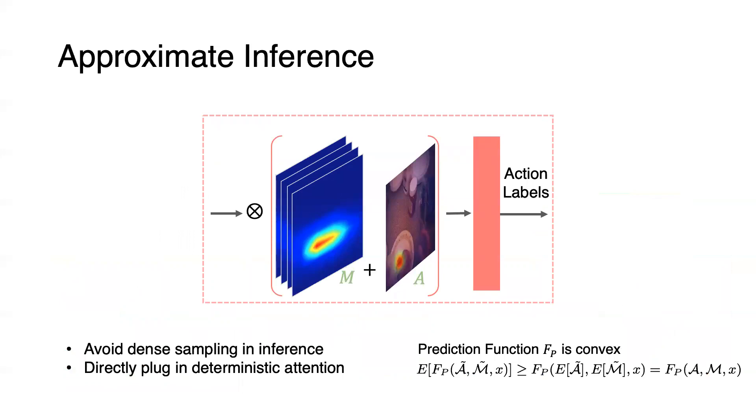During training, multiple samples of the same input will be drawn at different iterations. So theoretically, we should also draw many samples and take average at inference time. This dense sampling process can be computationally expensive, so we take a shortcut of plugging in the deterministic motor attention and interaction hotspots. Note that the action-anticipation function is composed of a linear mapping function and a softmax function, and therefore it's convex. So by Jensen's inequality, this approximation does provide a valid lower bound of dense sampling.